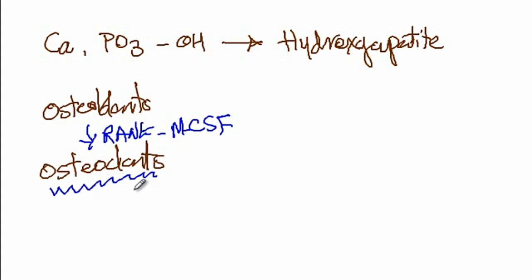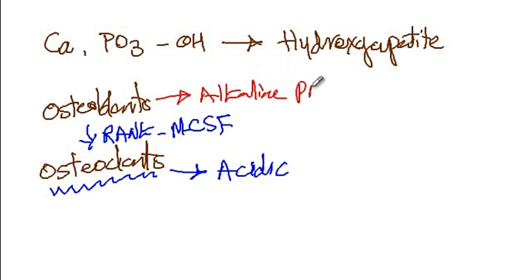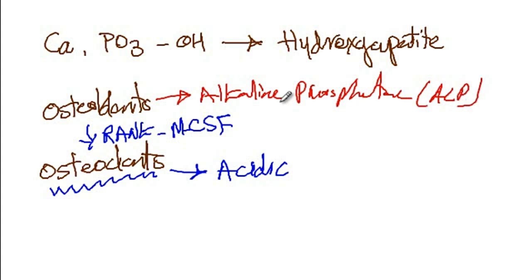Osteoclasts, in order to destroy the bone, will secrete an acidic solution. Acid will help destroy the calcium components and dissolve the bones. Osteoblasts, which are forming bone, require an alkaline environment to form bone since an acidic environment destroys bones. So alkaline phosphatase, or ALP, is a component used to determine osteoblast activity.